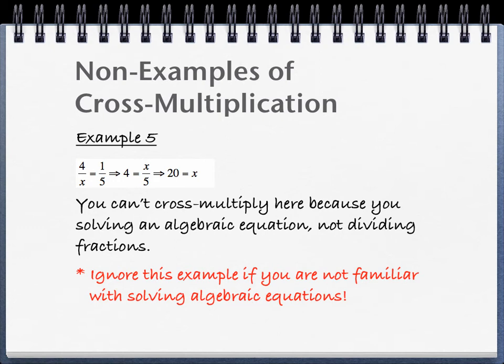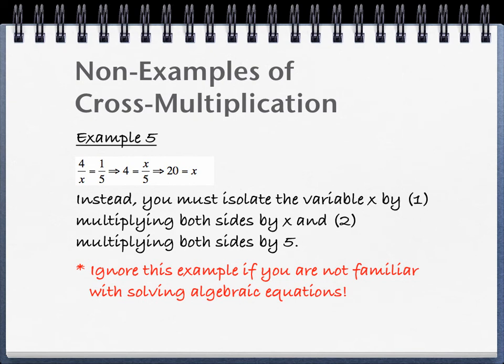So we have to, again, isolate the x on one side of the equation. So we're going to multiply both sides by x here to get rid of that in the denominator. And that'll get us 4 equals x over 5. So to isolate the x, we can, again, multiply both sides by 5. And that gets us x equals 20.